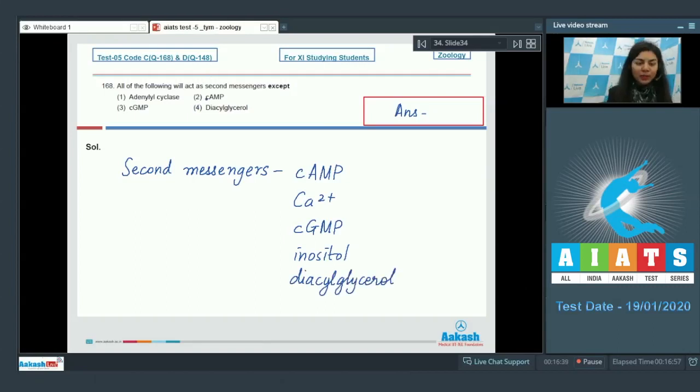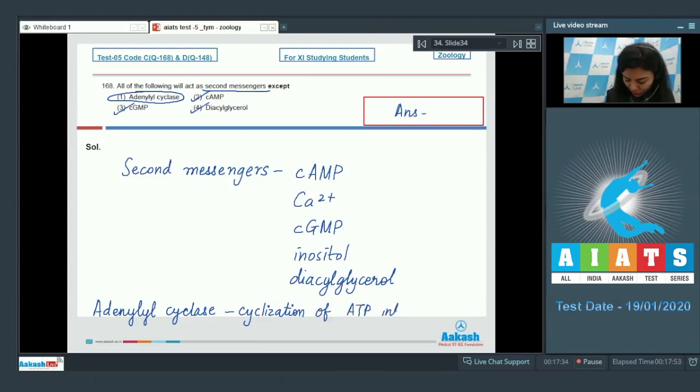Among the given options, option number two, three, and four are all second messengers. Adenyl cyclase, also called adenylate cyclase, catalyzes the cyclization of ATP into cyclic AMP, and for this the pyrophosphate has to be cleaved. The correct answer here is option one, adenyl cyclase, because it is not a second messenger.